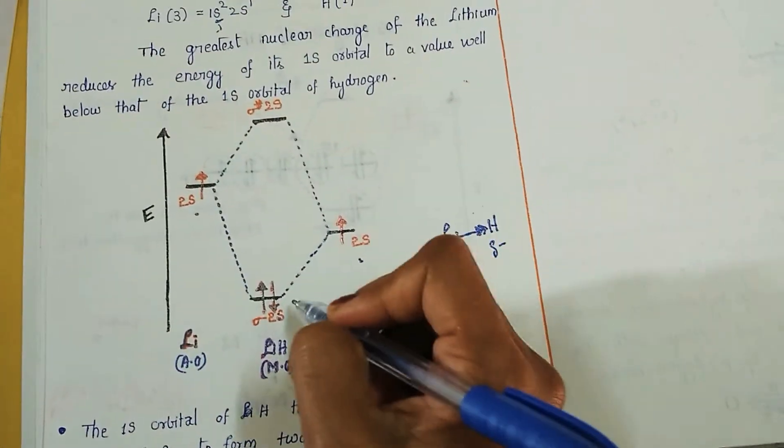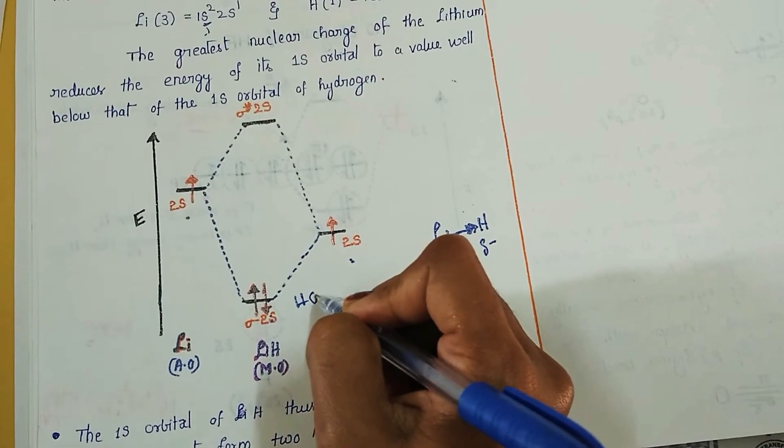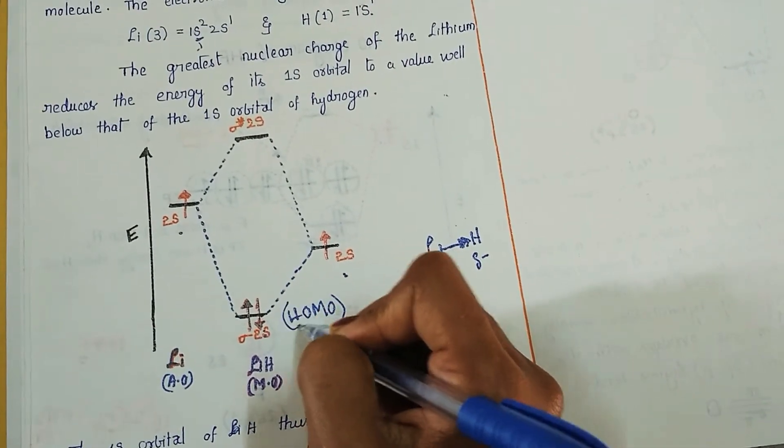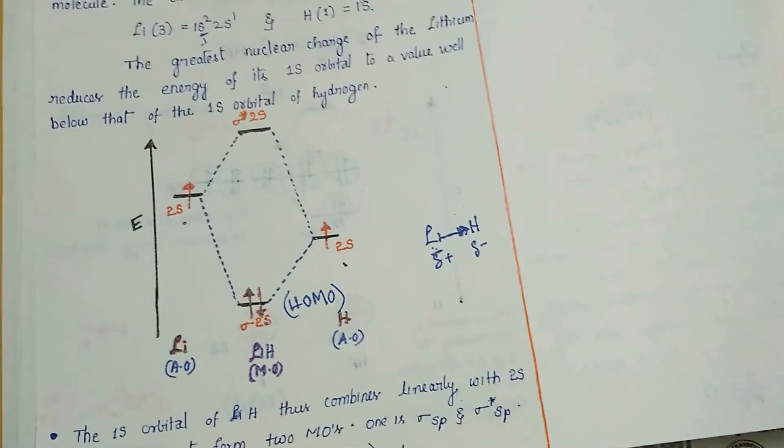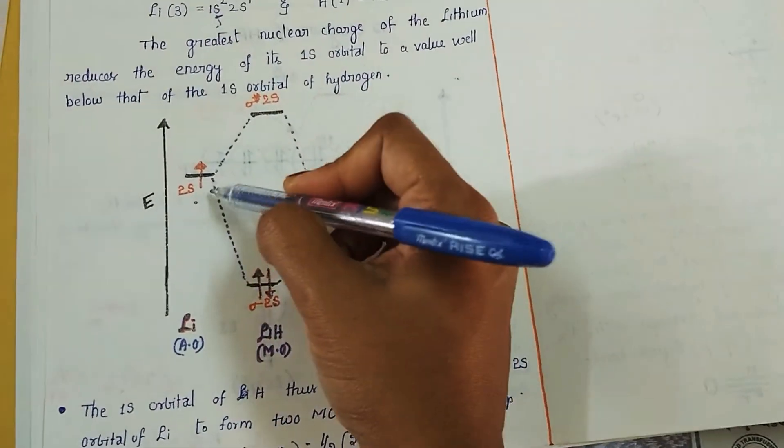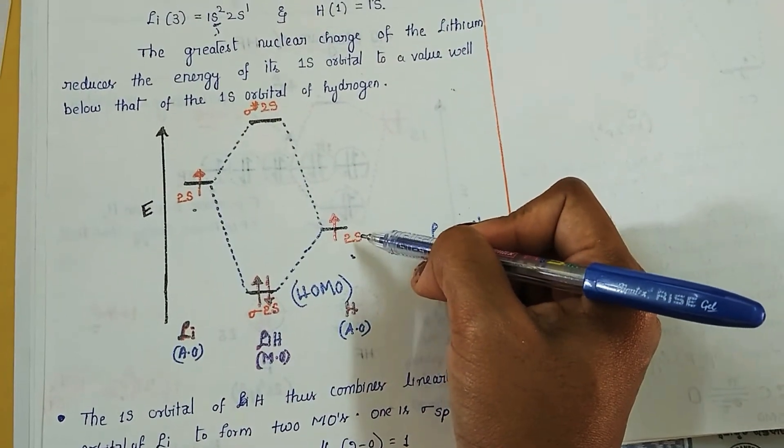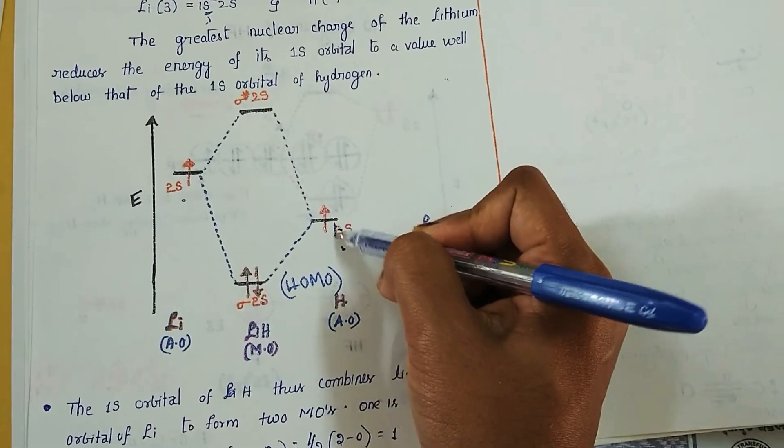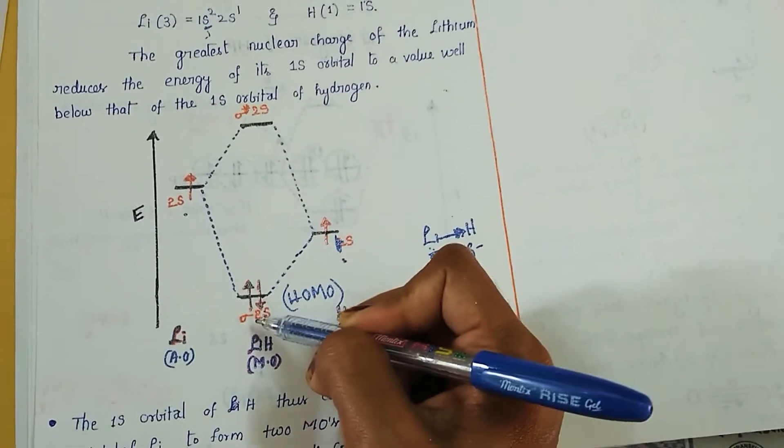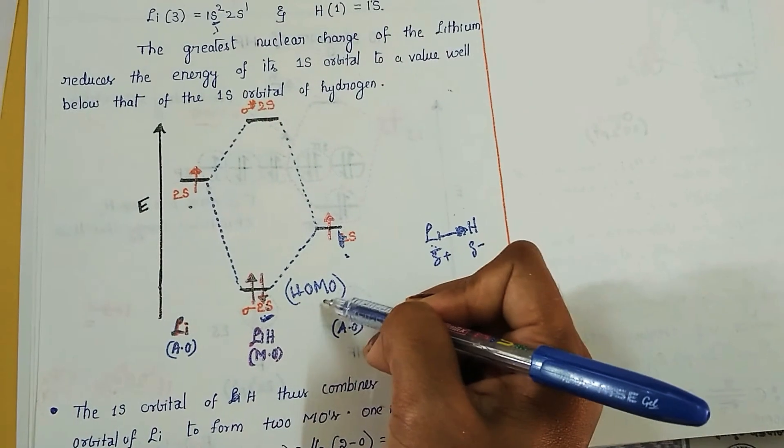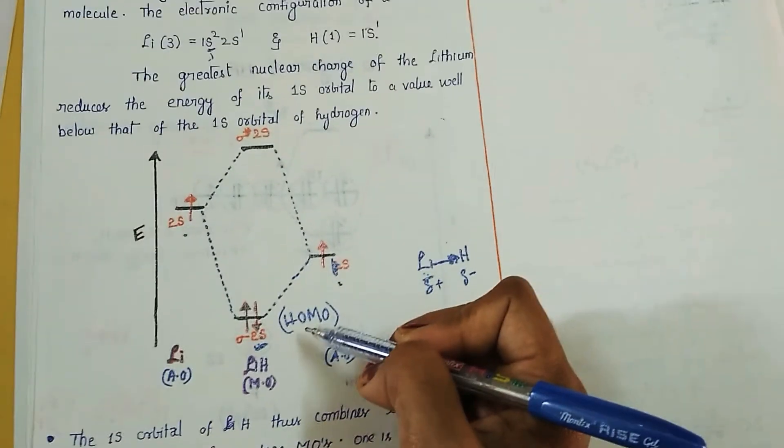So which is the highest occupied molecular orbital? Here HOMO will become bonding molecular orbital which is coming from linear combination of 2s electron with hydrogen's 1s electron. So this sigma 2s is considered as HOMO in lithium hydride.